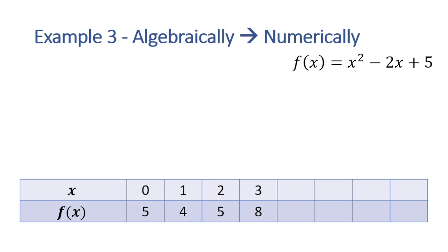Here, we do this for x equal to 4, which gives us an output of 13. x equal to 5, which gives us 20. And x equal to 6, which gives us 29. And then we add all these values to our table.